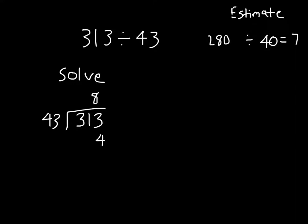8 times 3 is 24. 4, regroup the 2. 8 times 4 is 32, plus 2 is 34. 4, uh-oh, 344, that means 8 is too much and too high.